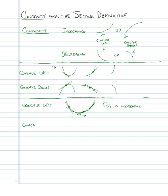When talking about concave down, if we pick a point on the left, the tangent line has a big positive slope. Moving further along, the slope is still positive but smaller. Further along, the slope becomes negative, and further yet, it becomes a bigger negative. The slopes of the tangent lines are decreasing — from big positive to small positive, to small negative, to big negative — so a feature of being concave down is that the derivative is decreasing.